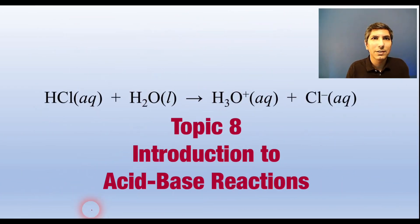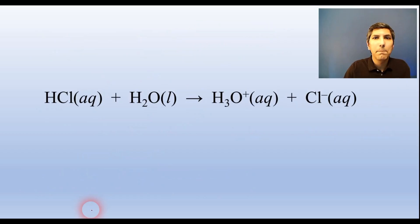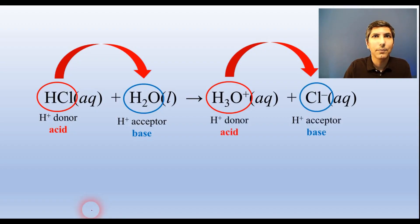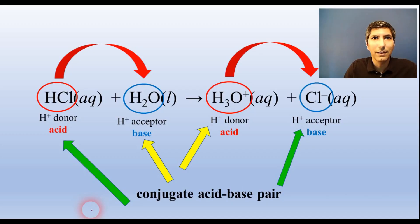The Bronsted-Lowry definitions tell us that an acid is a proton donor, and a base is a proton acceptor. Remember, a proton is just an H-plus ion. In this example, hydrochloric acid reacts with water to produce hydronium ions and chloride ions. Here, hydrochloric acid is donating the H-plus, so it's an acid, and since water is receiving that H-plus, it's a base. If the reaction were going in reverse, chloride would be receiving protons, so it's a base, while hydronium donates the H-plus, so it's an acid. We can pair these up into conjugate acid-base pairs, two acid-base pairs for every reaction like this. In every conjugate acid-base pair, the acid has one more H-plus than its conjugate base. Realize that water can act as either an acid or base depending on what it's reacting with.